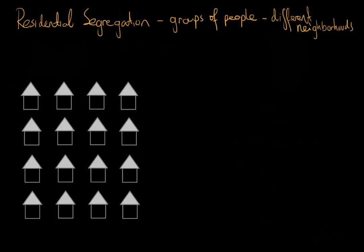Now, when I say groups of people, often times we actually mean groups of people by race, but sometimes we can mean groups of people by income.